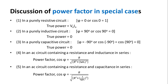Case 2: in a pure inductive circuit, there will be a phase difference of φ = 90°, hence the true power is equal to 0. Case 3: in a purely capacitive circuit also, there will be a phase difference of −90° between current and voltage. Cos(−90°) = 0, hence the true power is also 0. Thus, no power is consumed in the circuit even though there is a current. Such a current is called wattless current.